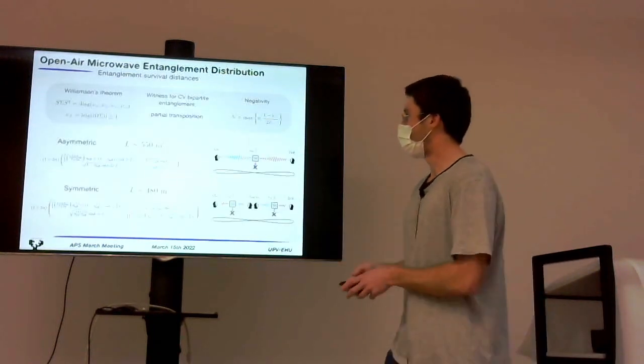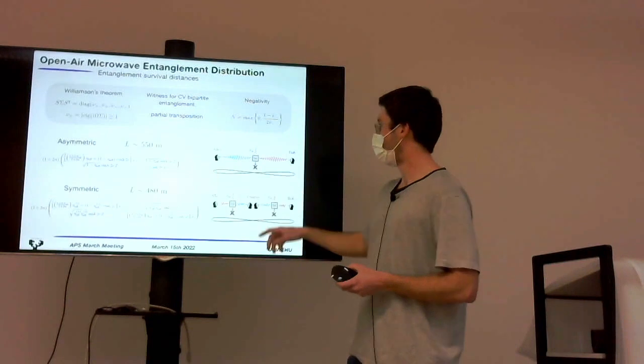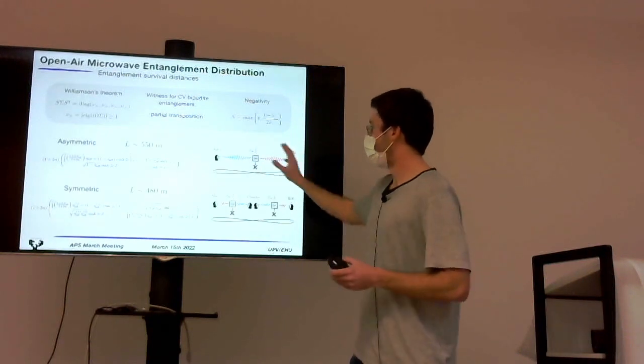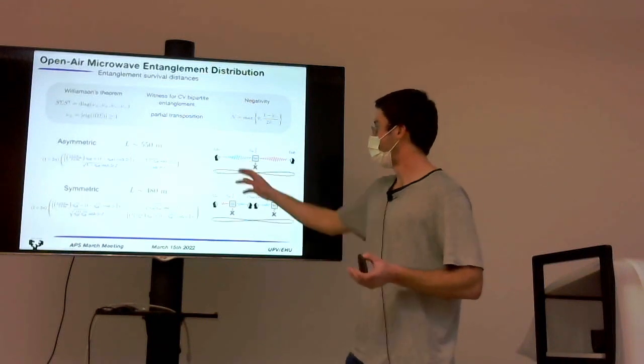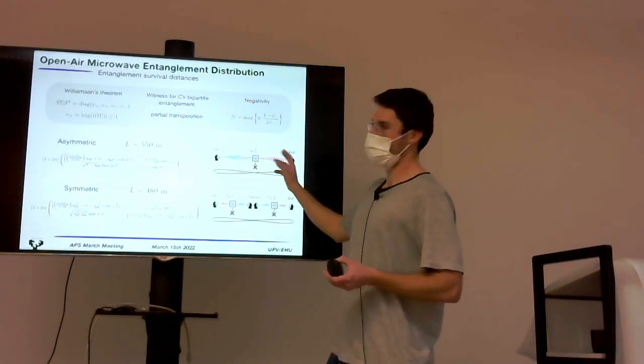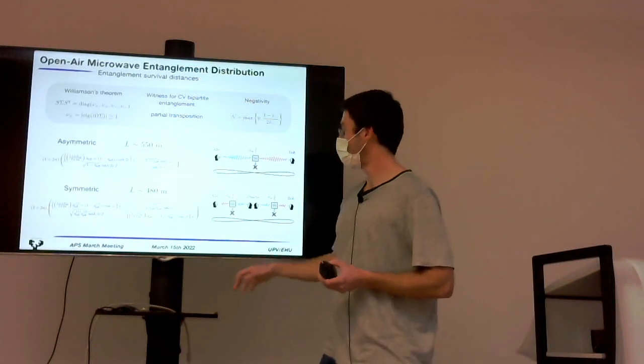This kind of state corresponds to the asymmetric scenario that we consider, in which if we are connecting two parties, consider that Alice generates the states, keeps one of the modes and sends the other one to Bob, and now they share an entangled state.